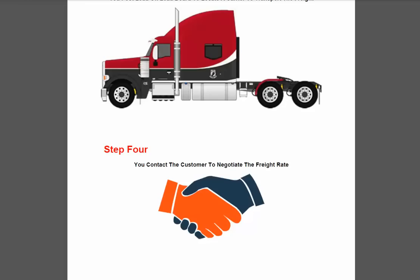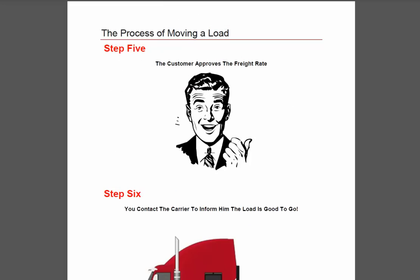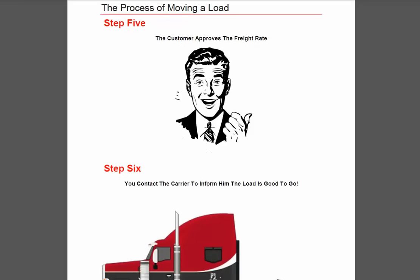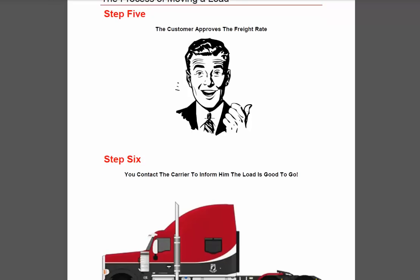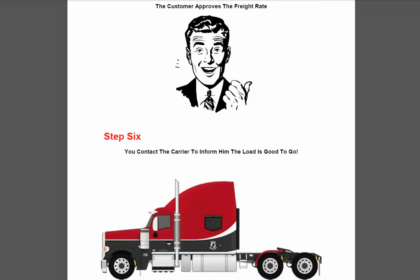If he does agree to your freight rate — whether you've matched his rate that he needs or whether he agrees to the new freight rate that you can actually get it transported for — you're going to go into the next step. Step five: he's going to approve the rate. At this point in time, you're going to do a couple of different things. You're going to talk to your shipper, go over all the final load details, make sure he's good with the rate. Once again, you're just going to reaffirm it.